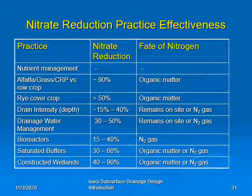We have several practices that farmers can use to reduce the export of nitrates from their drainage systems, though efficiency and effectiveness varies from site to site. Some of these are fairly new practices and we don't completely understand them yet. Many of these practices reduce nitrate concentrations in the range of 30 to 60 percent. Changing from row crops to alfalfa grass can reduce nitrate levels roughly 90 percent. Rye cover crops appear to reduce levels about 50 to 60 percent. Changing drain intensity can reduce nitrates 15 to 40 percent. Drainage water management can reduce 30 to 50 percent. Bioreactors can reduce nitrate levels 15 to 40 percent. Saturated buffers, a very new practice, are in the 30 to 60 percent reduction range. And constructed wetlands are 40 to 90 percent.